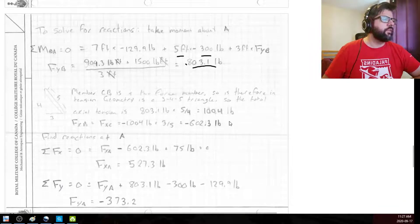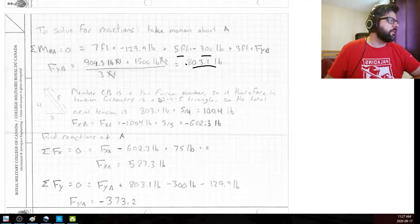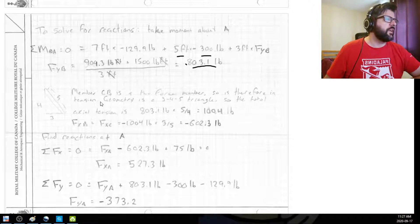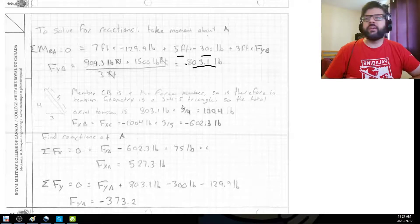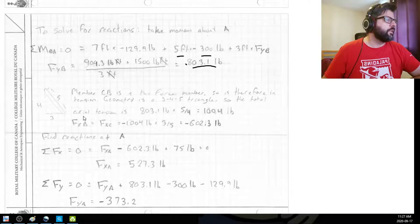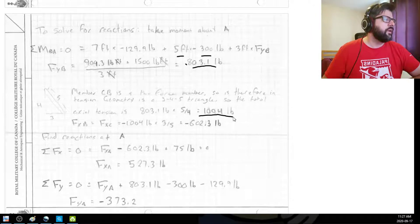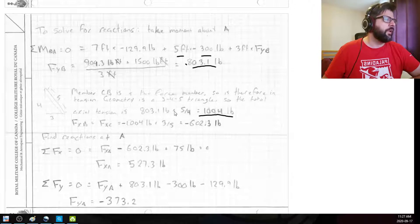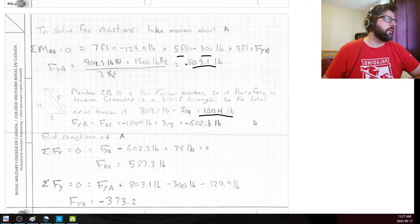So we do know that, like I said, we do know it's a two force member. So that'll be in tension only. Geometry is a three, four, five triangle. So essentially we can easily solve for what the total actual tension is. The total tension along that member is what we got times five over four. That gives us 1,004 pounds.